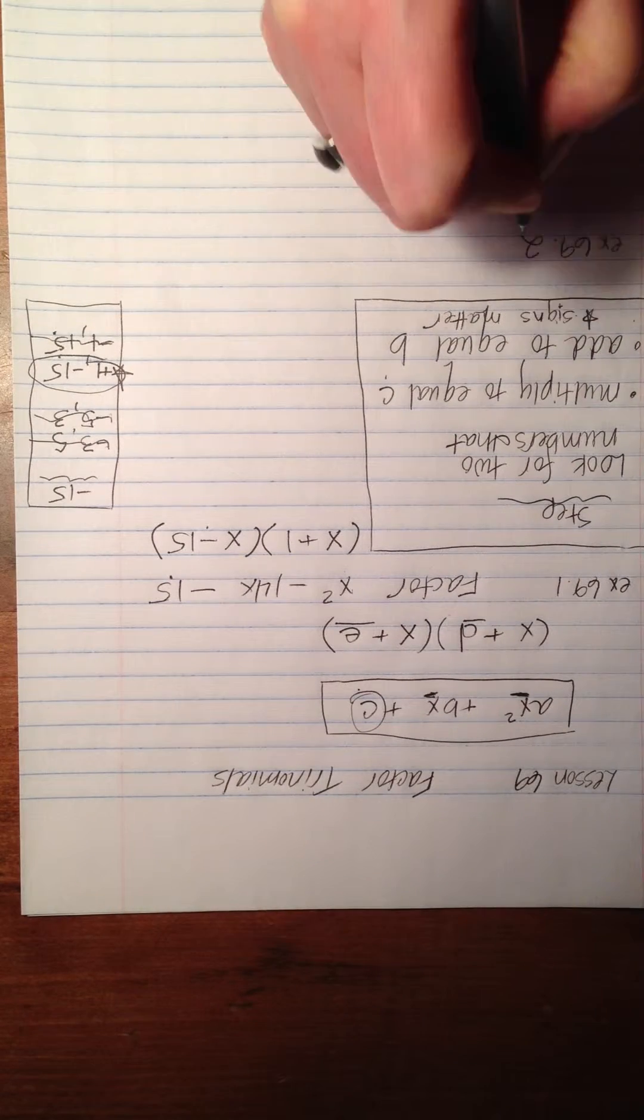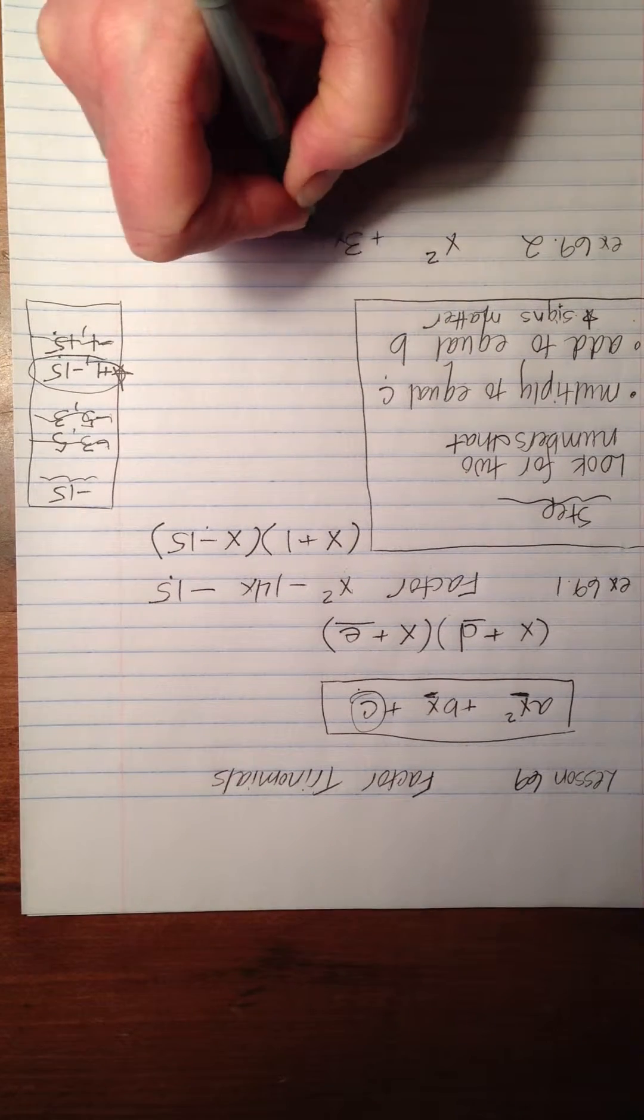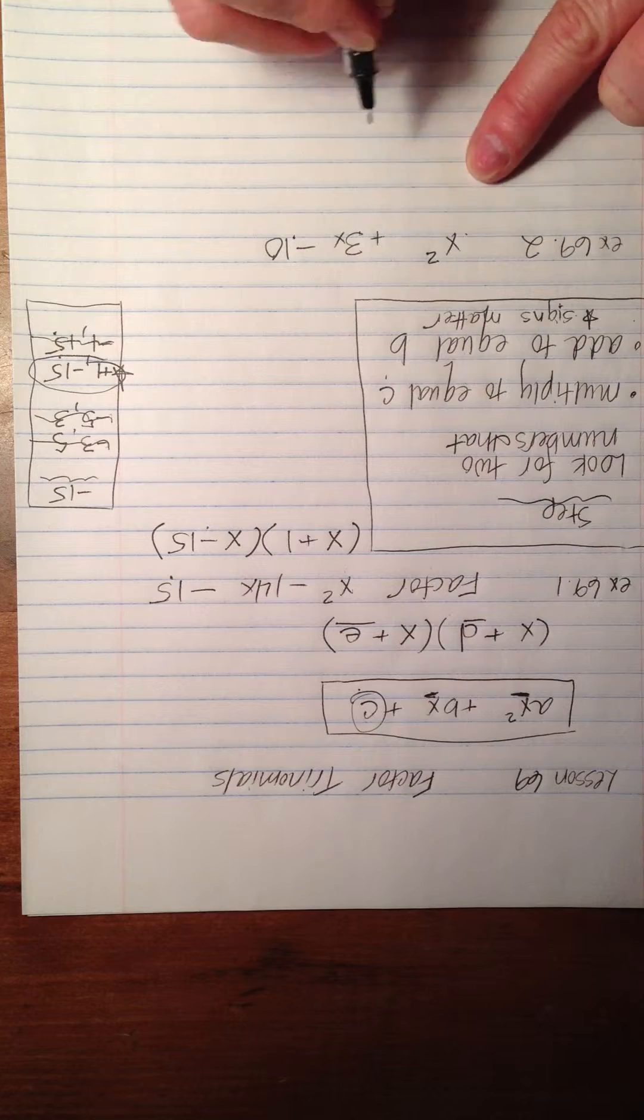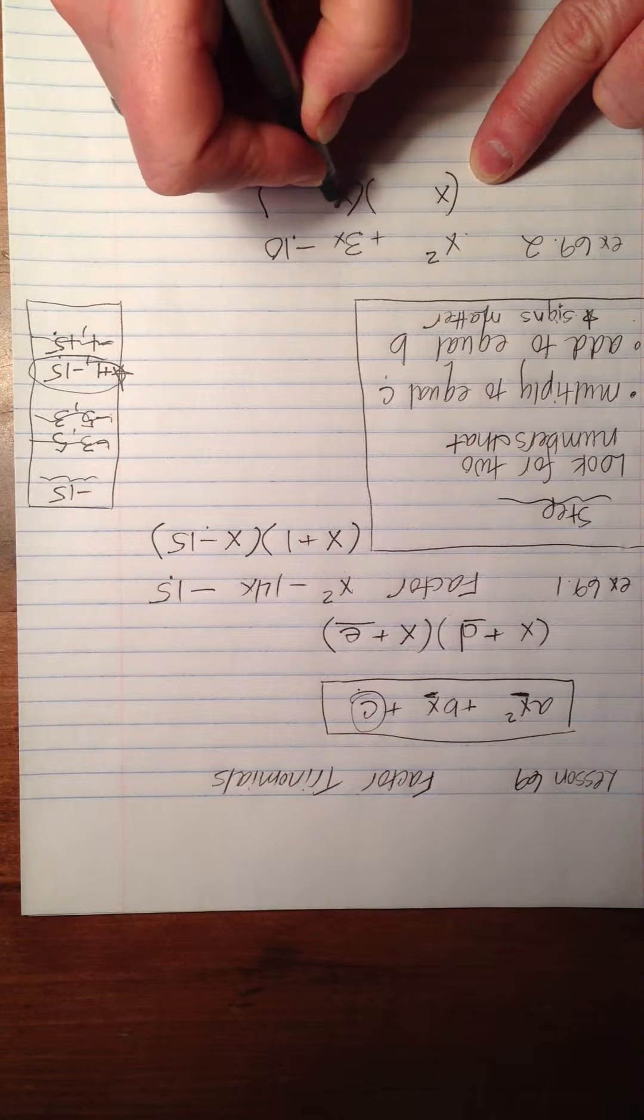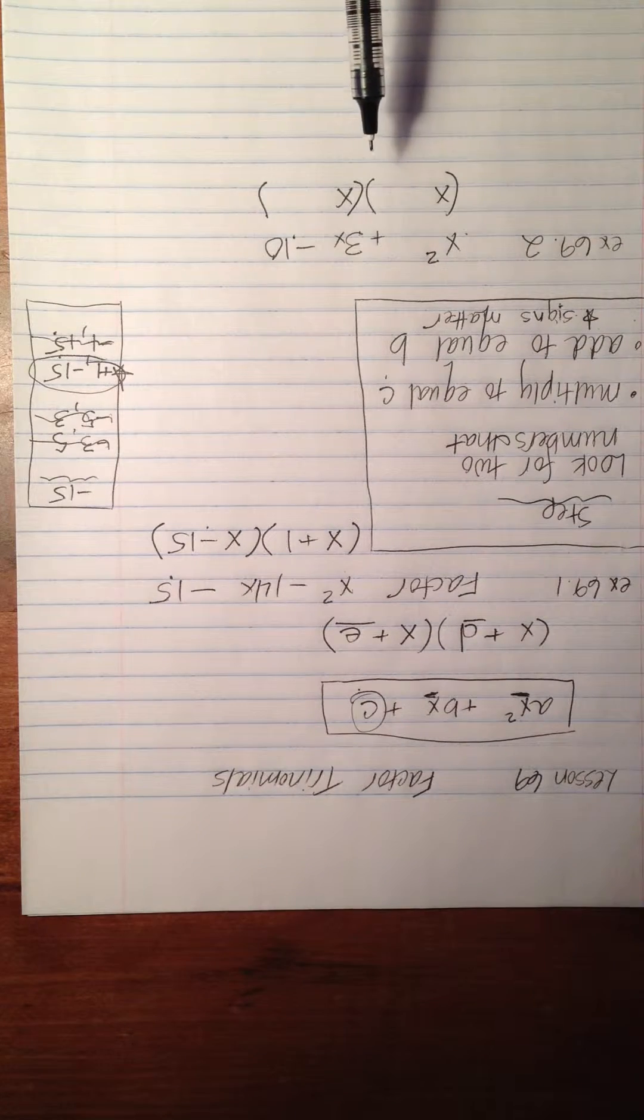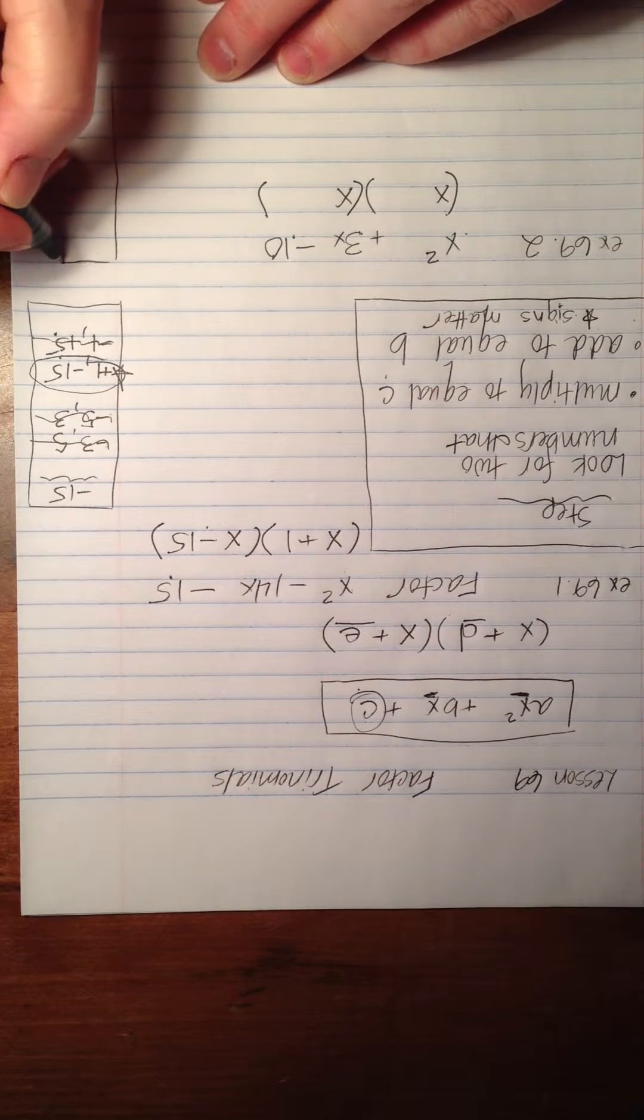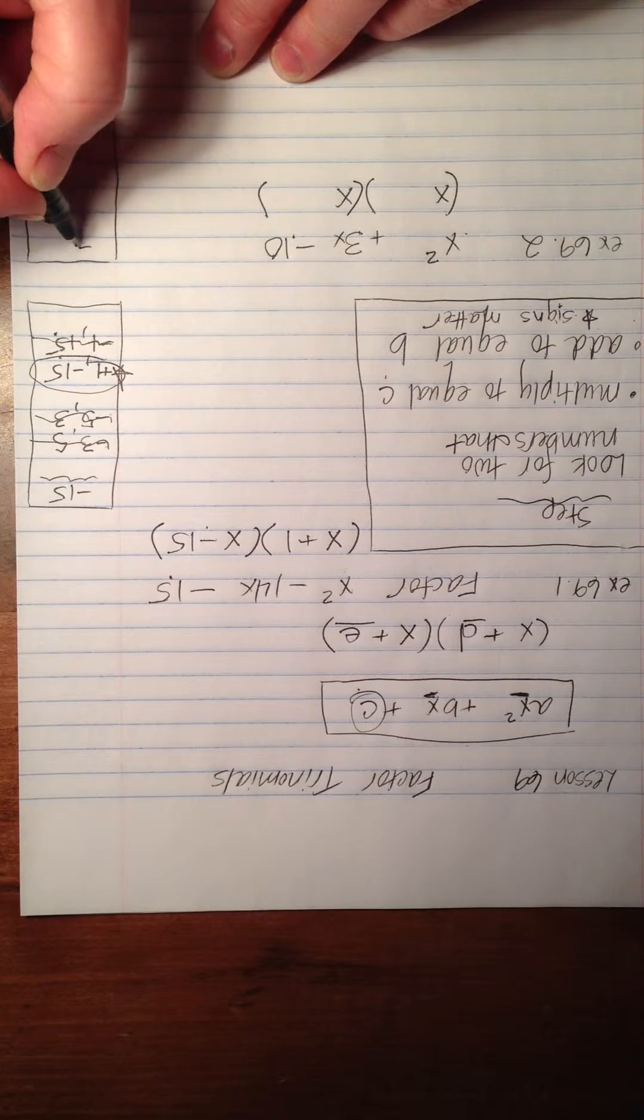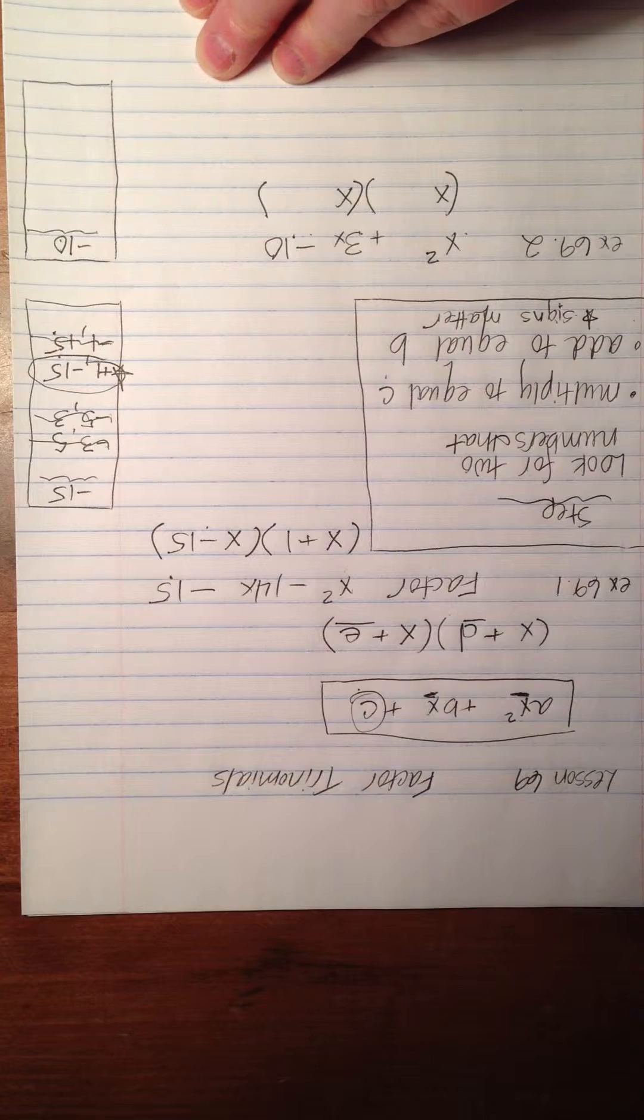Example 69.2. This time we're going to factor x² + 3x - 10. Remember, this is our a, this is our b, this is our c. We can set up our binomials right away. We know we're always going to have an x here. And now we're looking for the numbers and the signs to fill in to complete these binomials like we did before. So let's make our list. As you get stronger at doing these, you won't have to make the chart quite so blatantly. You can do it in your head. But for now, this is the best way to proceed.